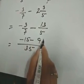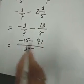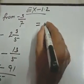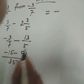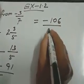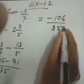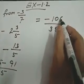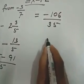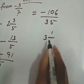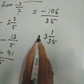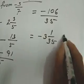Minus 15 minus 91 — both are minus. If both are minus, we will add and give the sign of negative. 91 and 15 gives 106, and the denominator will be 35. Now 106 by 35, if we divide, you will get 3 whole number 1 by 35, and you will give the negative sign. And this is your answer.